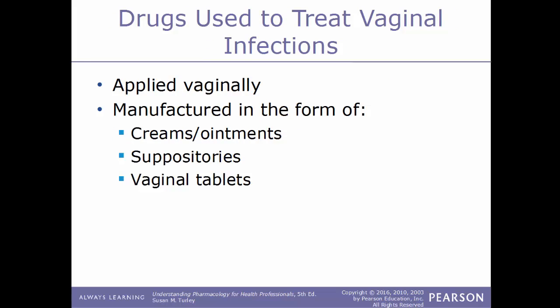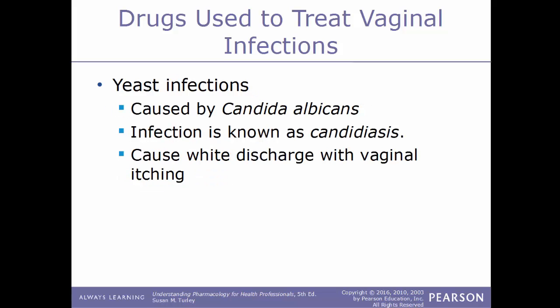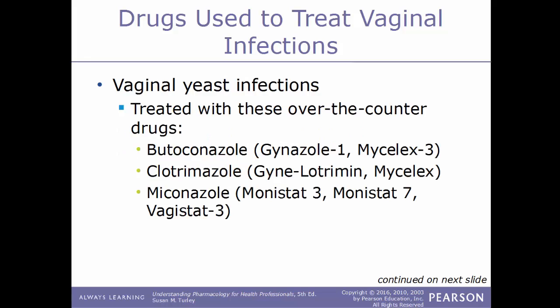Drugs used to treat vaginal infections are applied vaginally in various forms — creams, ointments, suppositories, or vaginal tablets. A common vaginal infection is a yeast infection caused by Candida albicans, also known as candidiasis. Symptoms include a white vaginal discharge and itching. Yeast infections can be treated with over-the-counter drugs including butoconazole (Gynazole-1, Mycelex-3), clotrimazole (Mycelex, Gyne-Lotrimin), miconazole (Monistat-3, Monistat-7, Vagistat-3).